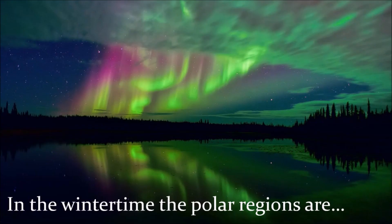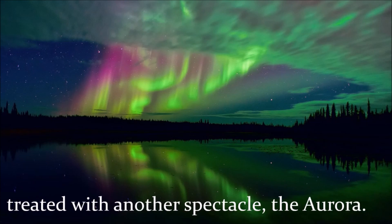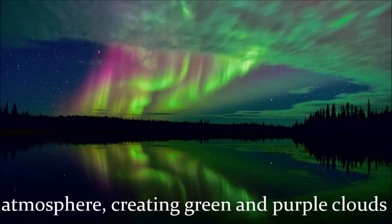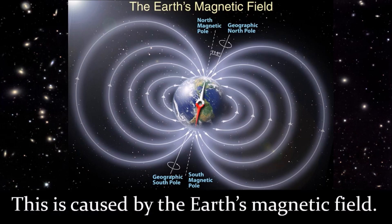In the wintertime, the polar regions are treated with another spectacle: the aurora. Particles of space radiation enter our atmosphere, creating green and purple clouds. This is caused by the Earth's magnetic field.